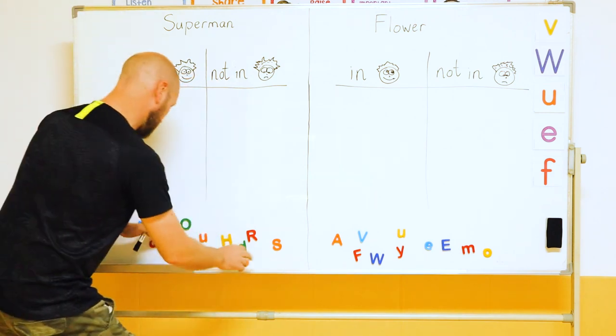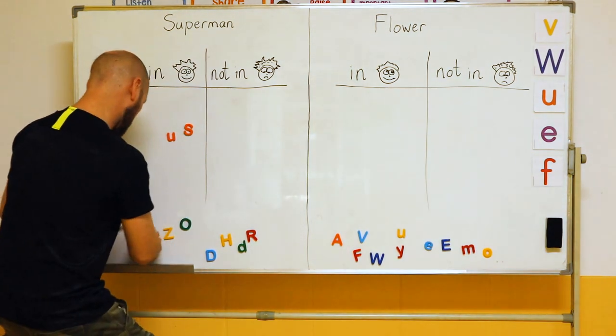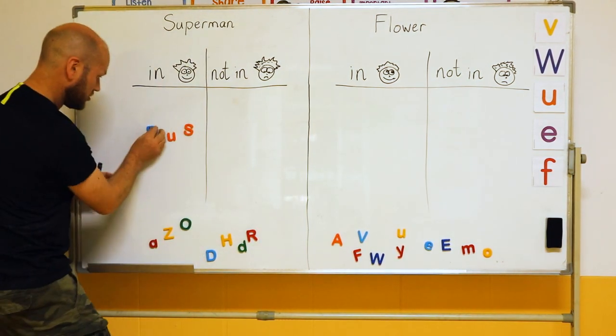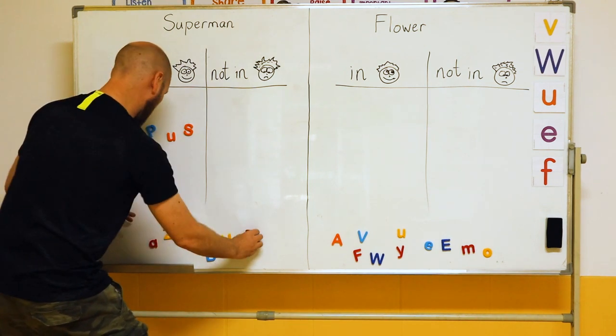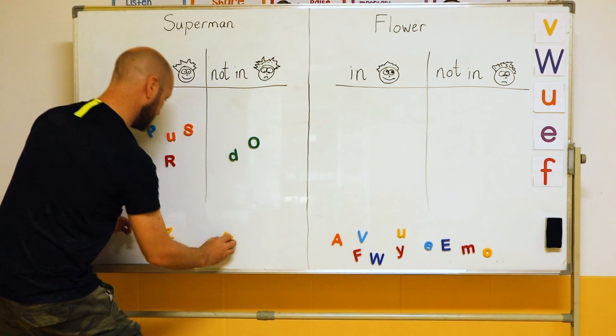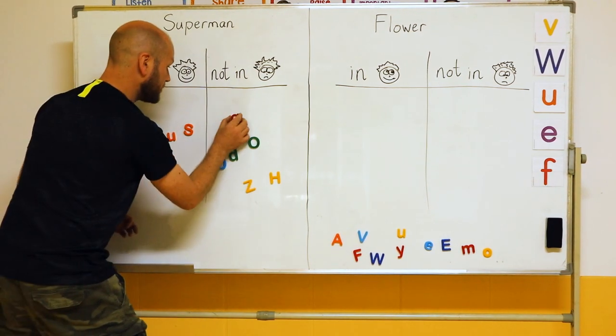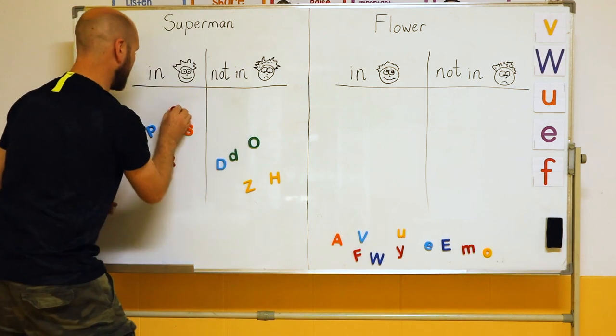So Superman checks out. He's got a U. He has an S. What else? He's got a P. There's a P. And an R. There's an R. He doesn't have D. There's no H. There's no D. Boom. Boom. There is an A. There is an H.